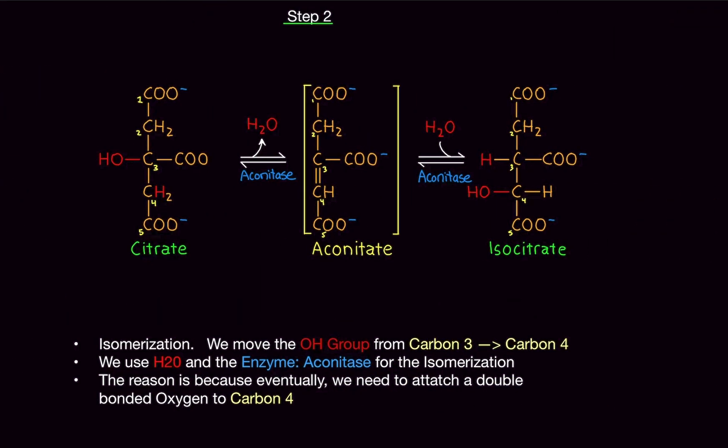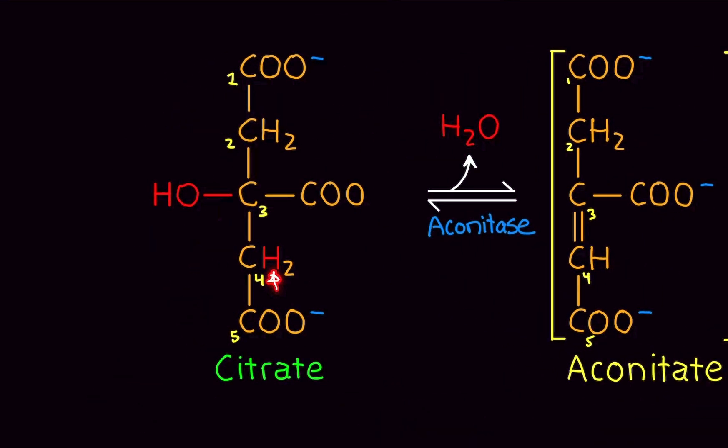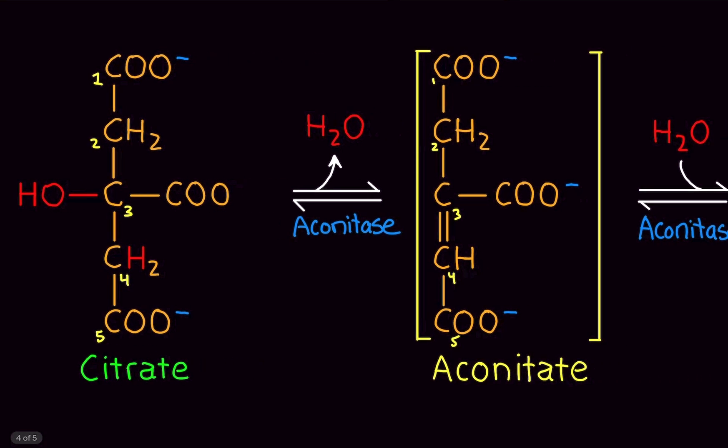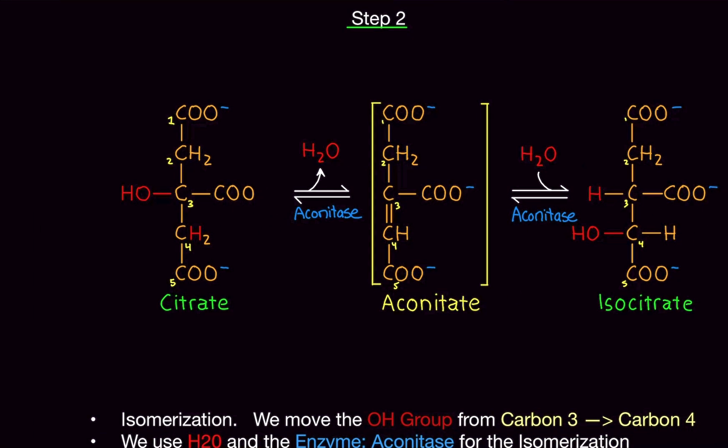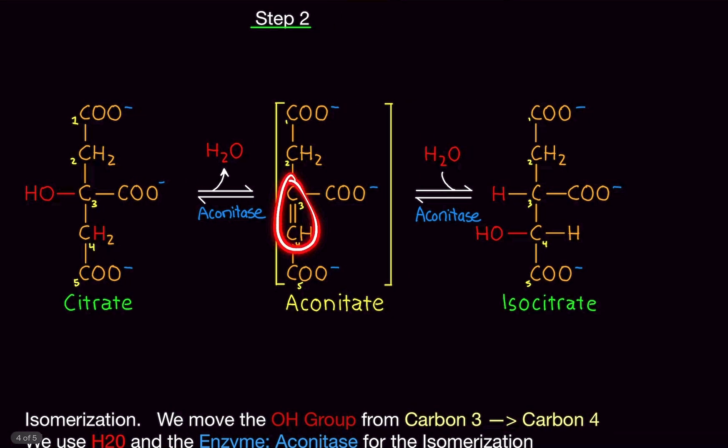Step two. Now we have the citrate. Here's what we're going to do. The hydroxyl group here and one of the hydrogens here on carbon number four is going to leave with the help of the enzyme aconitase. So water is going to leave. We're going to have some rearranging of bonds. The bond between carbon three and carbon four here is now going to be a double bond. I apologize. There's a missing negative charge here. There we go. Fixed. Okay. That's it. That's all we did. So water left. Aconitase will help with that. And we have now a double bond between carbon three and carbon four. That's it.